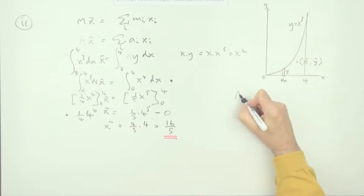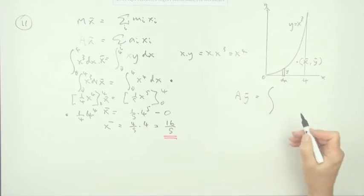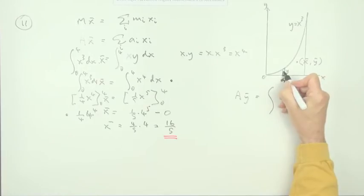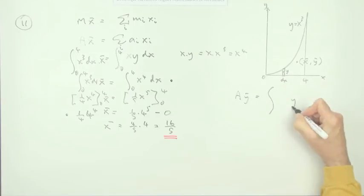So going around the x-axis, the area of the whole thing times ȳ should equal each of these little parts. Now this time the center is in the middle of that. That's halfway up. So the area of that strip is still y times dx.